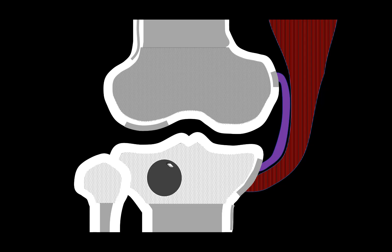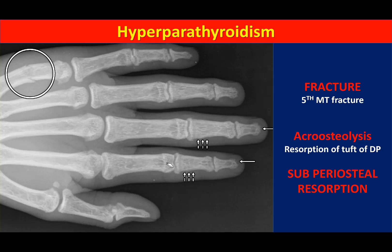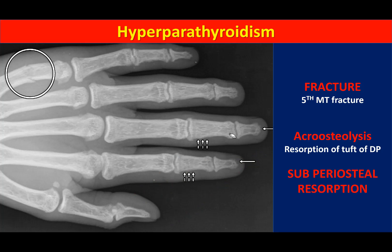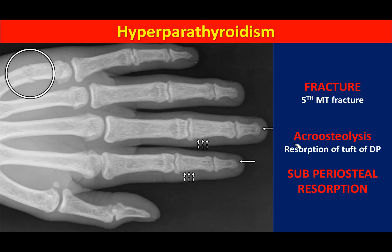In a patient with hyperparathyroidism, fractures can occur due to increased bone resorption weakening the bone. Classical subperiosteal resorption occurs on the radial aspect of the phalanges, mainly involving the middle phalanx of the index finger, producing a lace-like pattern of resorption. Resorption at the tip of the distal phalangeal tuft is called acro-osteolysis.